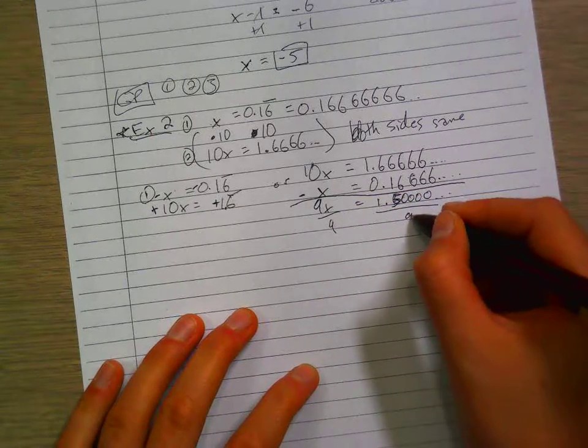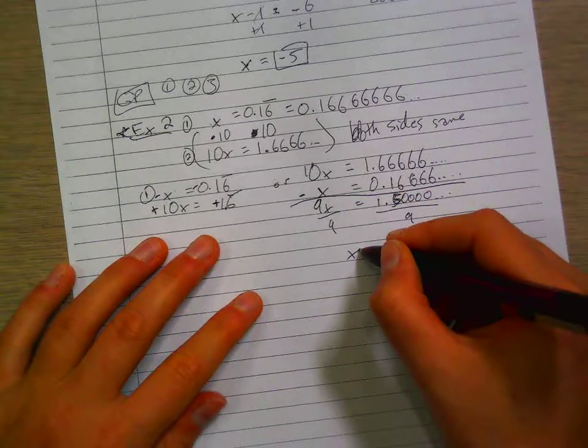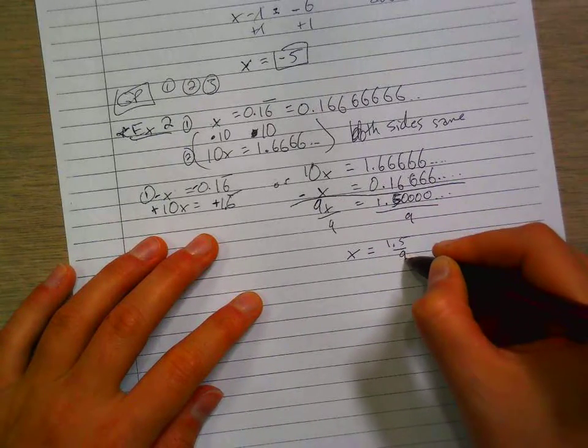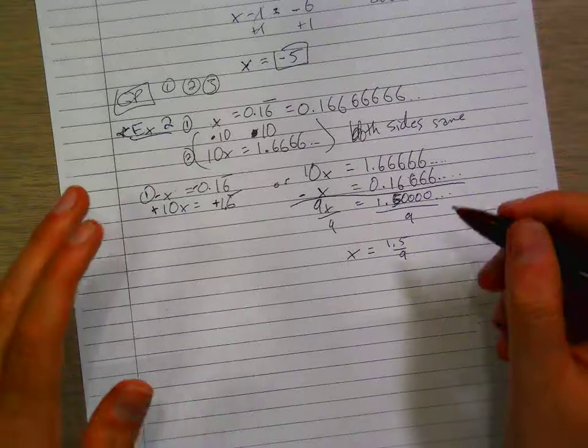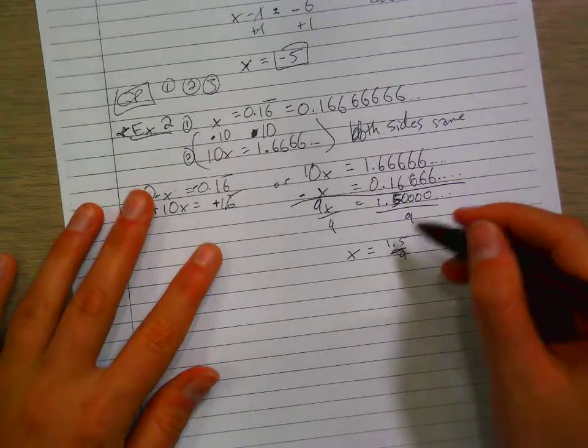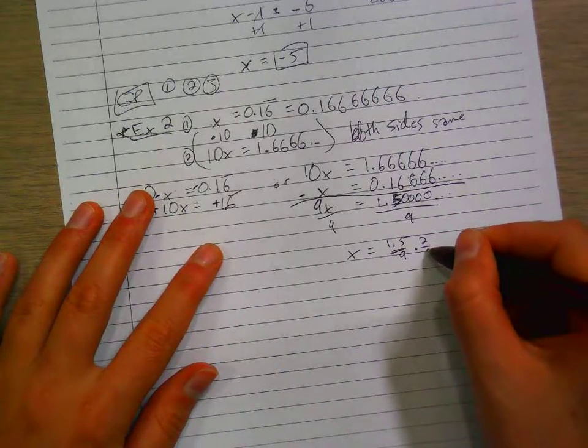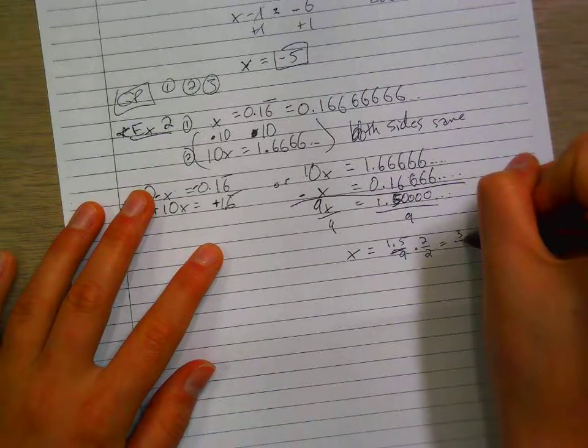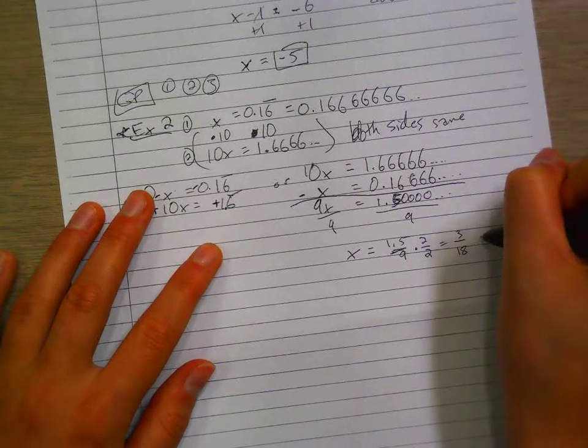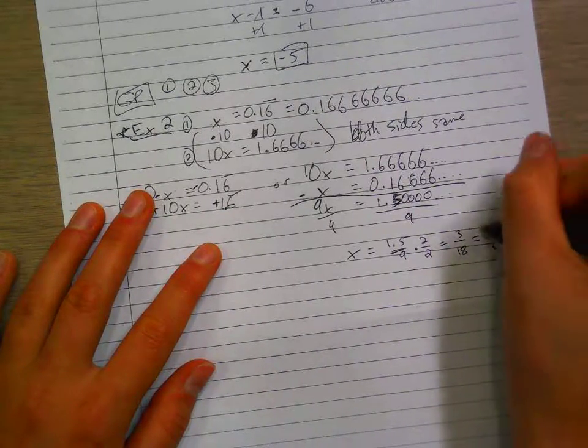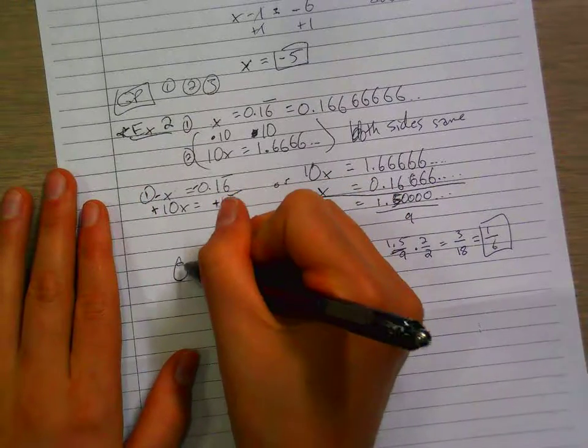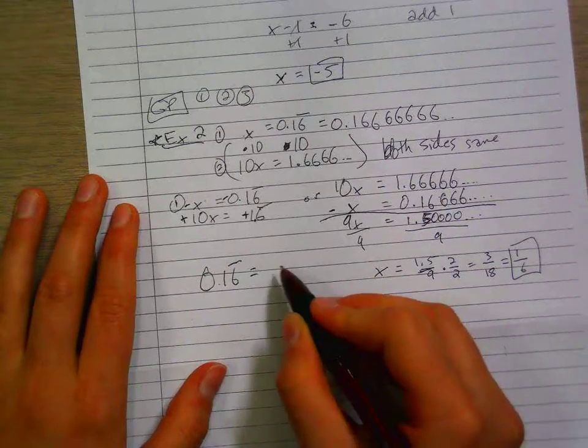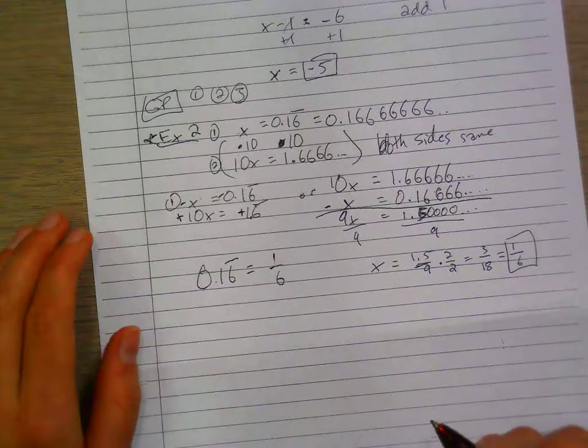Then we just have to divide both sides by 9, and that tells us that x is equal to 1.5 over 9. Now 1.5 over 9, you can have a fraction on the top, so let's just multiply it times 2 and times 2, which gives us 3 over 18, and that can be simplified as 1 over 6. So we could say 0.16 repeating is equal to 1/6.